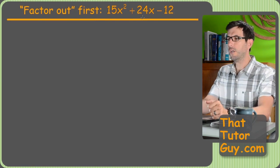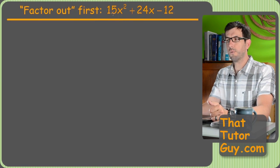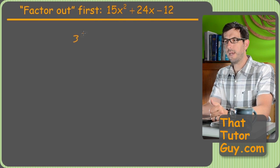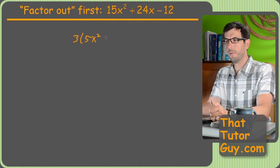So as you can see, there's actually a number that will go into all three of these, and that is 3. So I could pull a 3 out first, and then I'll get 5x squared plus 8x minus 4.